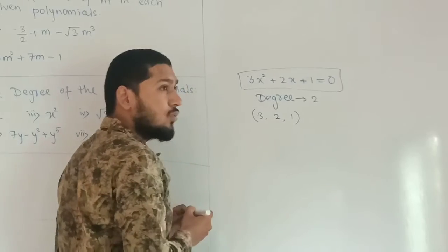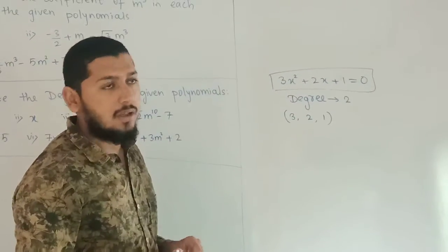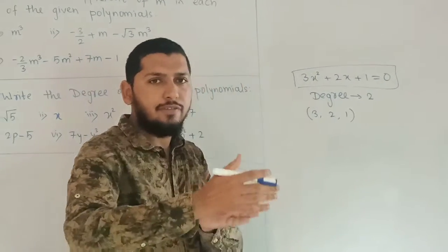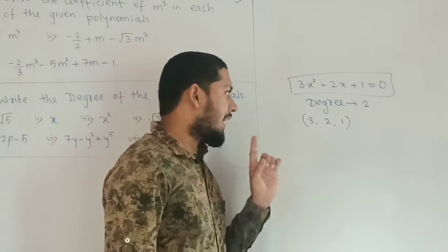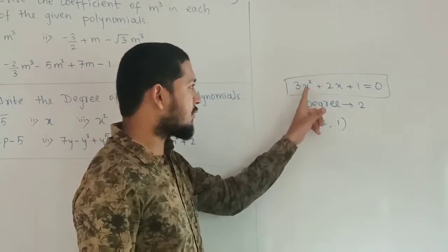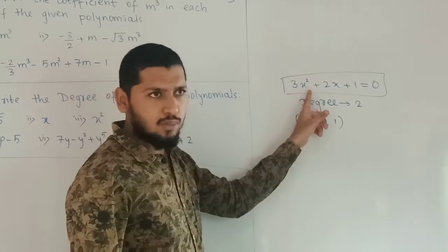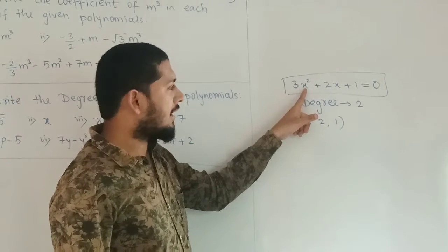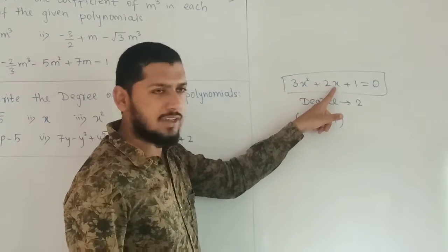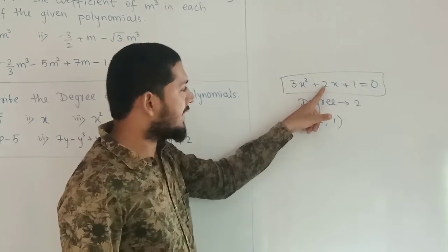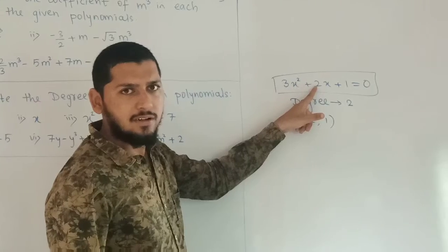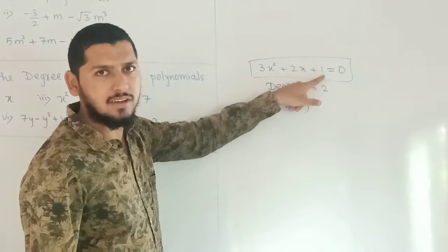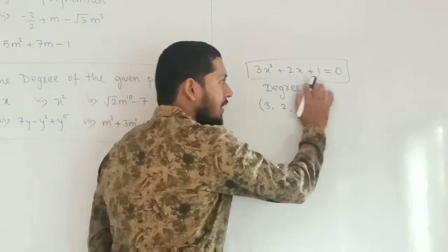These three numbers are the coefficients of that polynomial. If they ask you to find the coefficient of x squared only, you have to look at the multiple number of x squared. If they ask for the coefficient of x only, you write 2. If they ask for the coefficient of the constant, you write 1.